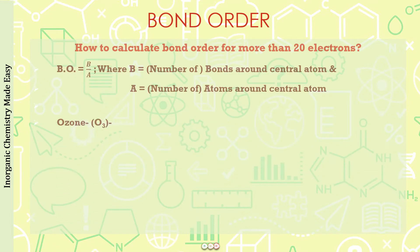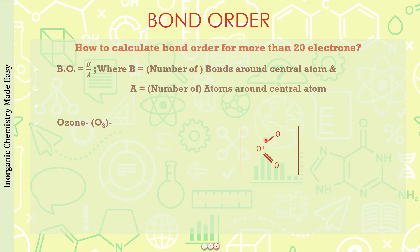Back to the ozone molecule. Draw just one lowest structure. The central atom is the middle oxygen. Count the bonds around it: one bond on one side and two bonds on the other, so B equals three. The number of atoms around the central atom is two, so A equals two. Therefore bond order is three divided by two, which is 1.5 — the same answer, but without drawing any resonating structures, saving time.